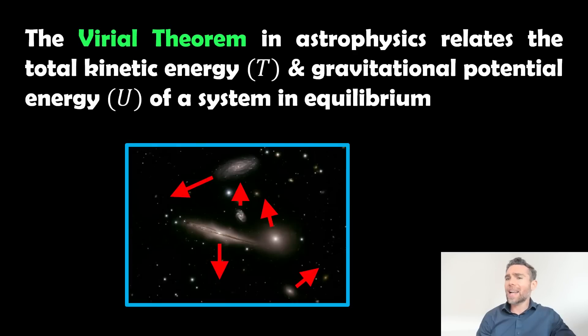So what actually is it? Well, this particular theorem, specifically in astrophysics anyway, because that's the context of this video, it relates your total kinetic energy T and the gravitational potential energy U of a system that's in equilibrium. So if the system's in equilibrium, we've got our total kinetic energy and we've got our gravitational potential energy as well.